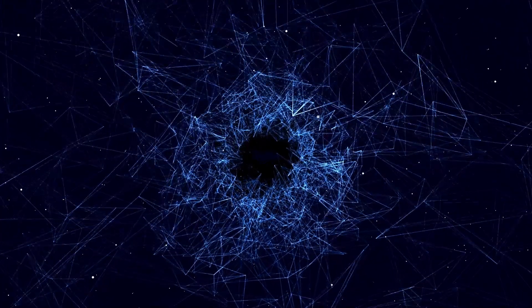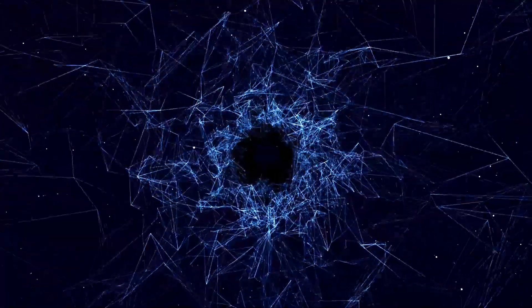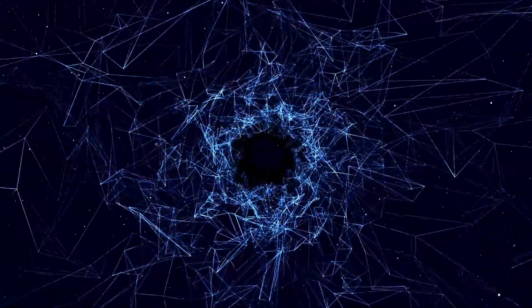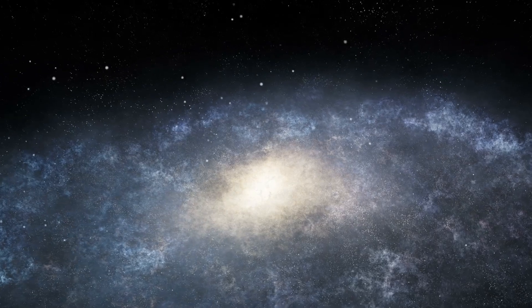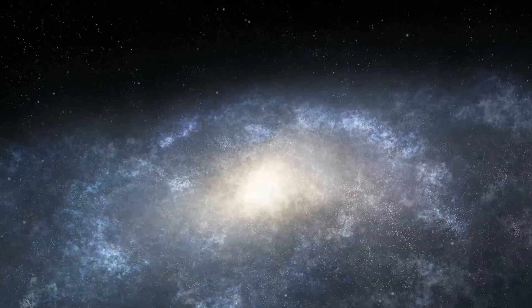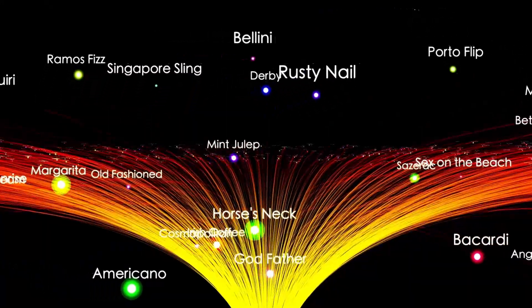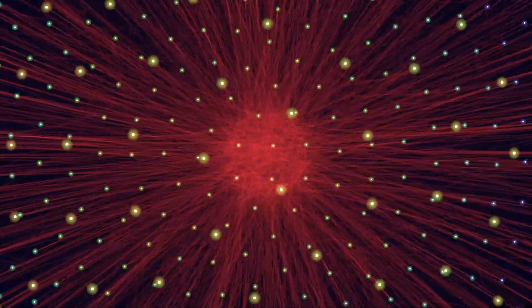But the trajectories serve another purpose beyond synchronized arrival. By approaching from different directions, the fragments will have unobstructed views of different regions of Earth. Fragment A, approaching from the solar direction, will observe Earth's dayside and the hemisphere facing away from the sun during approach. Fragment B, coming from above, will map polar regions and have a different perspective on Earth's surface.